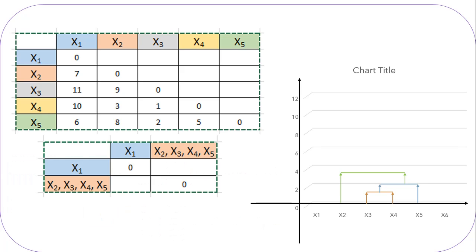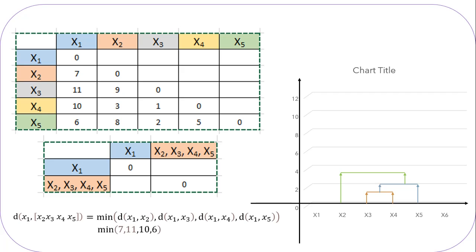Let's create a new matrix table considering cluster x2-x3-x4-x5 and data point x1. Diagonal will be 0. We only have to find the distance for data point x1 in cluster x2-x3-x4-x5. Distance from x1 to x2 is 7, x1 to x3 is 11, x1 to x4 is 10, and x1 to x5 is 6. The minimum value among all is 6, so the distance from cluster x2-x3-x4-x5 to data point x1 is 6, and we will create a dendrogram at a height of 6.